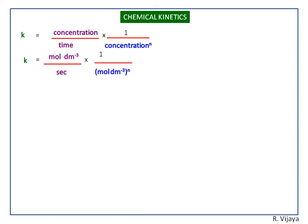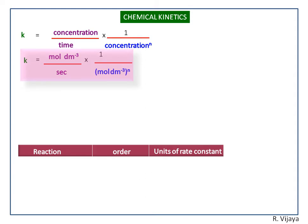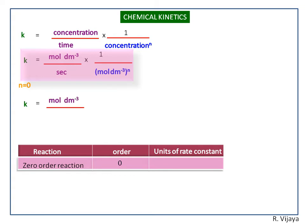We get this form to calculate the units of rate constant. First we calculate the zero-order reaction, that is n equals zero. Now we substitute n equals zero in the denominator, so we get mole per decimeter cube per second.